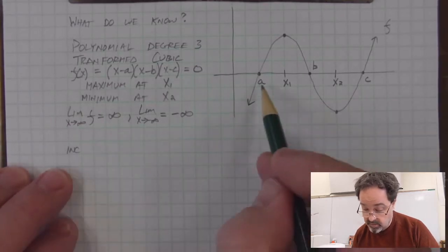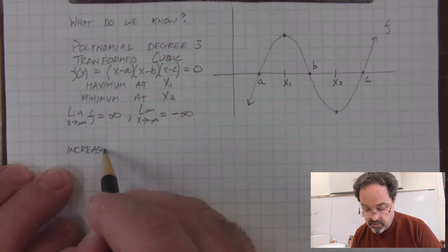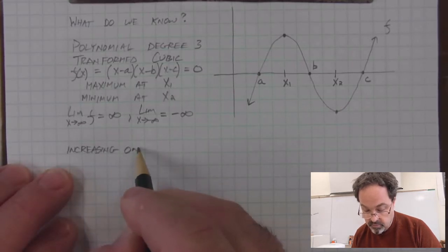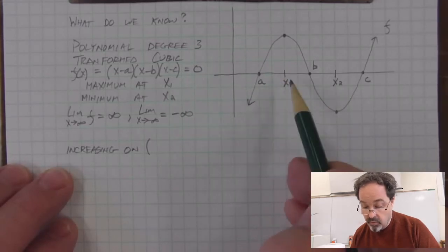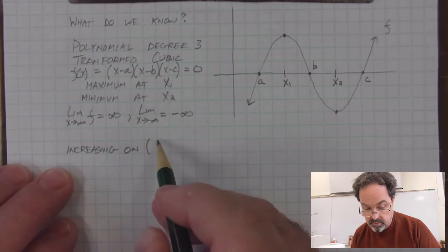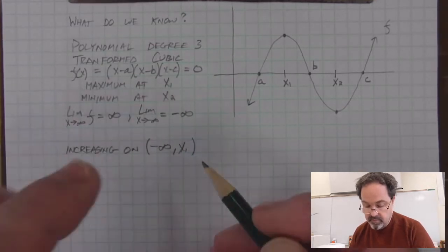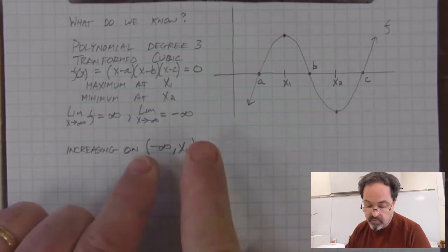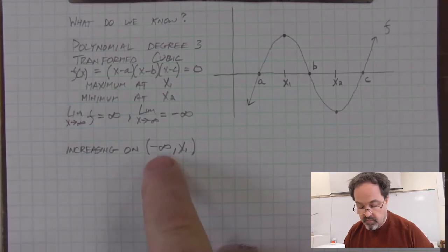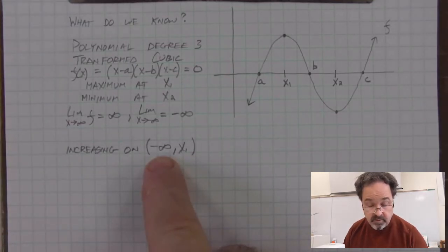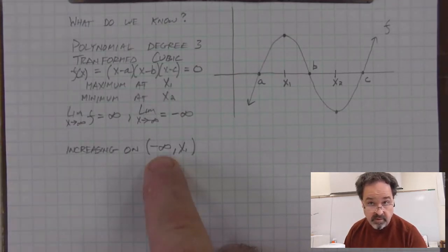So with this function and these labels, we could say that the function is increasing on the interval from negative infinity all the way up to x sub 1. So this is interval notation. It's not a point, but the reason why I use rounded parentheses in this interval is because we can't ever be at negative infinity. So we don't include negative infinity as a value that it is increasing at.